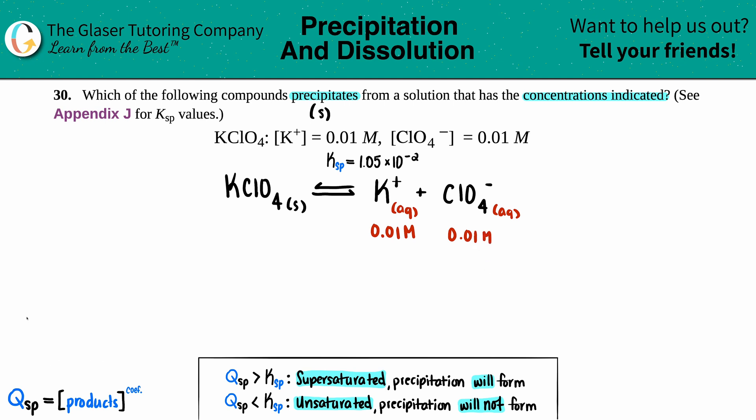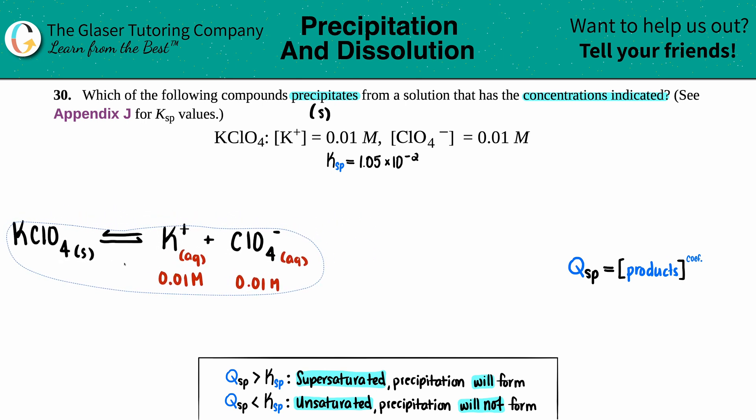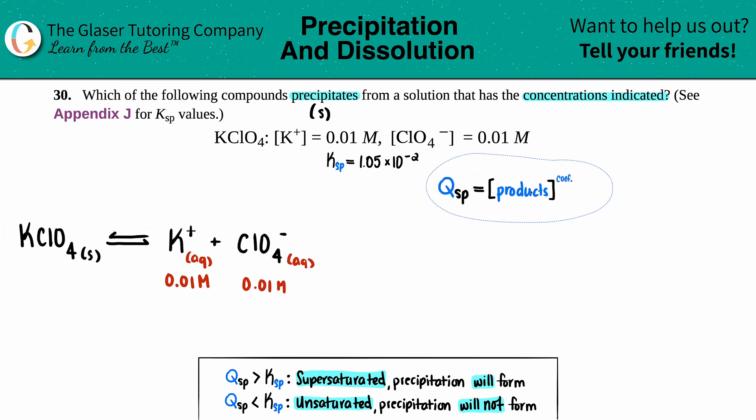So from there, I'm just going to find a Qsp. And that just comes from the products with the reactants. So now I just noticed that I do probably have to put this off to the side just so that I have a little bit more room. So here we go. And now let's make that equation, right? So Qsp, what we're basically solving for is equal to just the two products. So K plus times ClO4 minus.